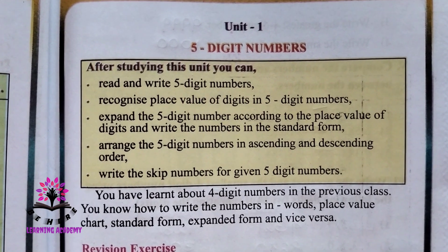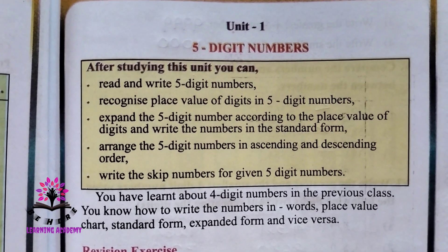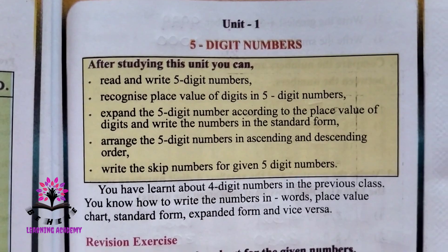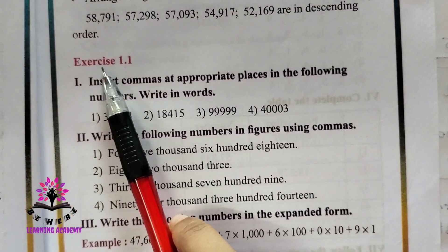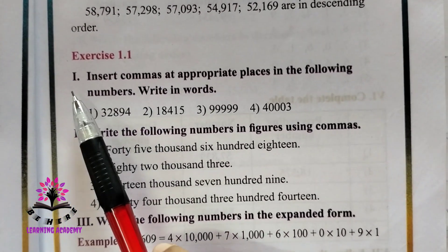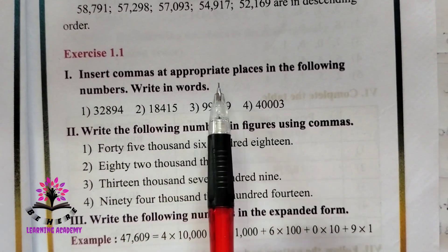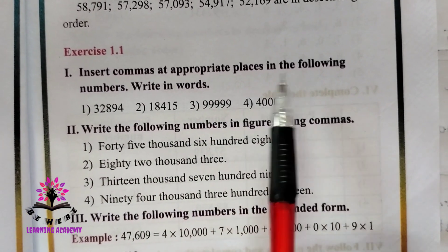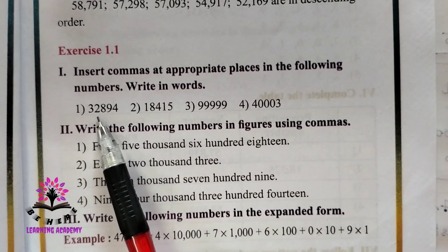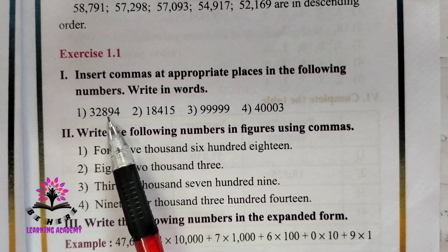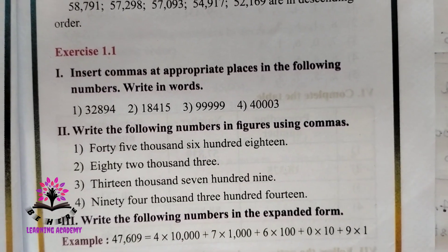Hello students, let us continue with the exercise of chapter five on five-digit numbers. See Exercise 1.1, Roman number one: insert commas at appropriate places in the following numbers and write in words. The first number is 32894. Let us solve one by one.